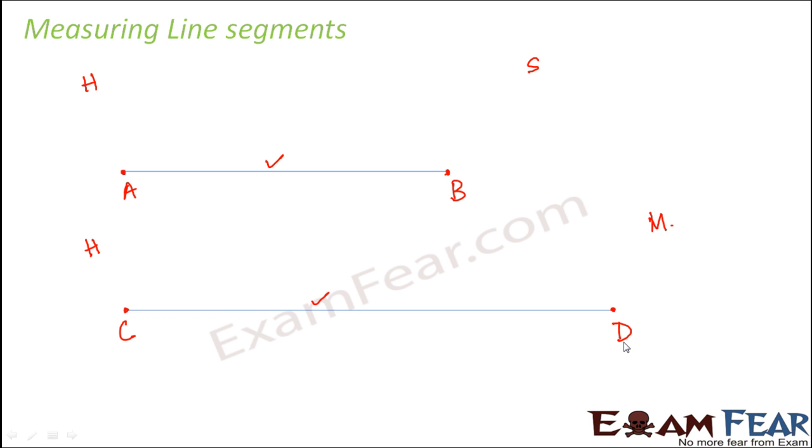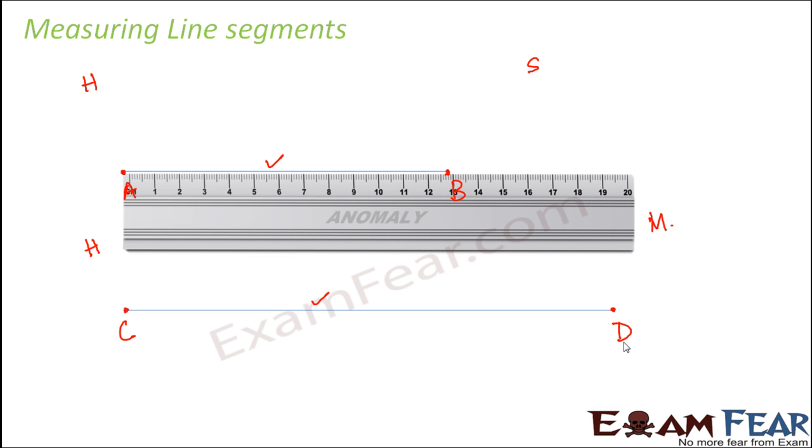So how do we measure their lengths using a ruler? That is one very simple approach to do that. So you take a ruler and then try to measure the length. So how do we measure the length? We make sure that while measuring the length, one end of the line segment should coincide with the zero mark on the ruler. So from wherever the marking starts, that point and the end point of the line segment they should exactly coincide with each other.